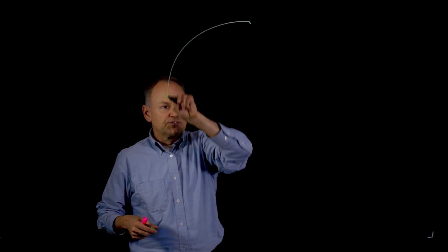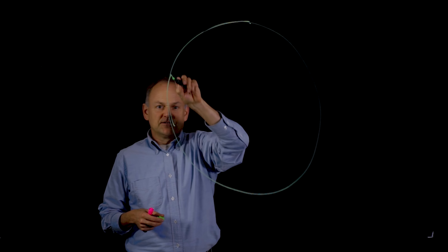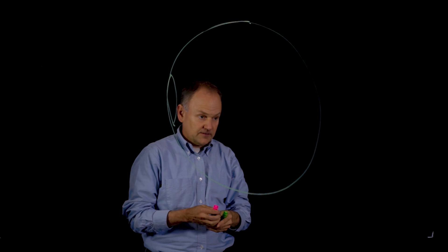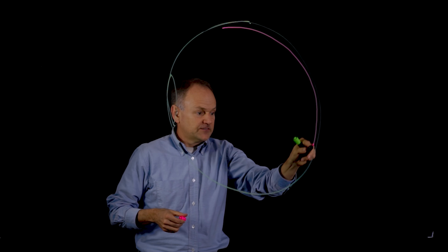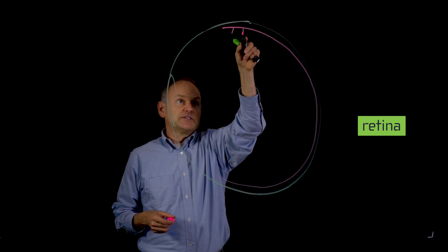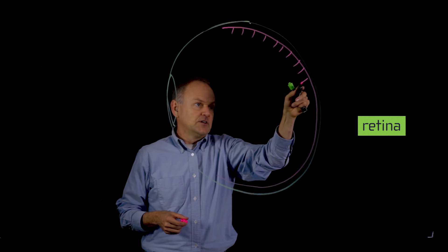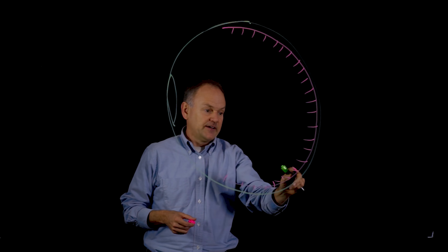In order to understand the process of image formation and sampling in the eye, we first have to look at the structure of the eye itself. We can draw a picture of the orbit of the eye with the lens in front and the retina behind. The retina is basically a very thin hemisphere of tissue which contains the rods and cones — the photoreceptive elements which actually detect light at the back of the eye.